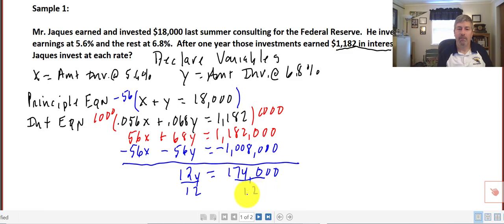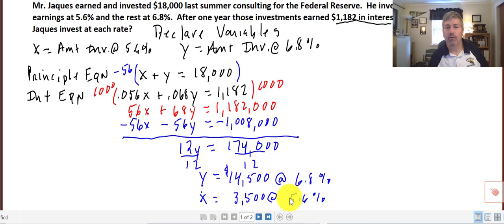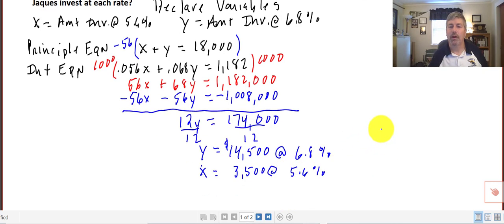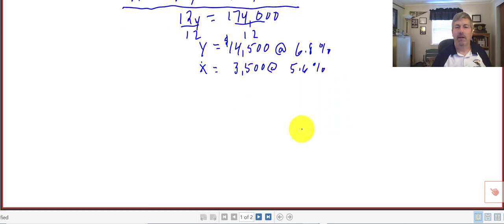I end up with 12y equals 174,000. Solve this for y. Divide by 12, and putting that into my calculator, y equals $14,500. Since y is the amount invested at 6.8 percent, Mr. Jakes must have invested $14,500 at 6.8 percent. Back substituting into x plus y equals 18,000, we can see that $3,500 must have been invested at 5.6 percent. Looks like Mr. Jakes is doing a little bit of diversification of his portfolio.